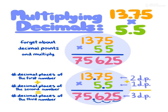On your screen, one example: 13.75 x 5.5. First, students, forget about decimal points and multiply. General multiply as in smaller classes. 1375 x 55. What is the multiply? 75,625. How can you put the point? The decimal places of the first number plus decimal places of the second number equal to the decimal places of the third number.